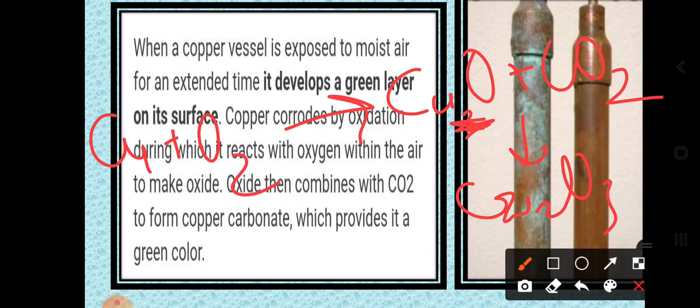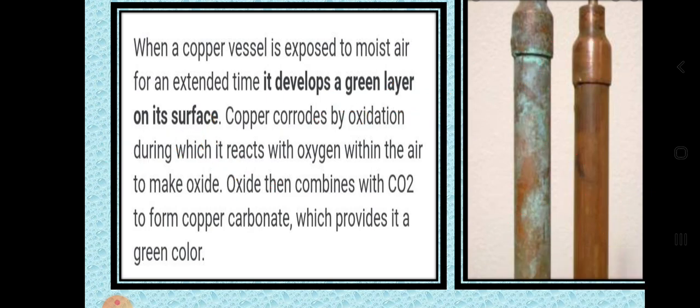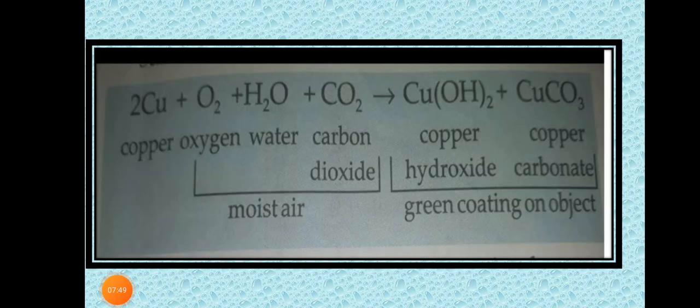The formula Cu₂O₃ represents copper carbonate. Now let us discuss how to write this reaction equation, recalling what we learned in the previous slide about representing metals and their reactions.